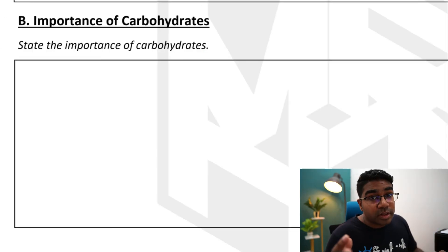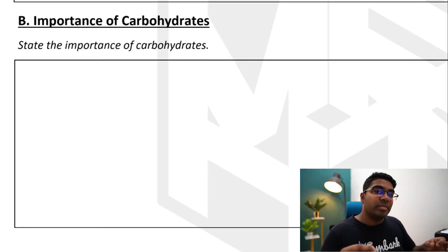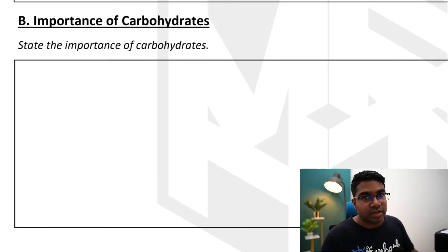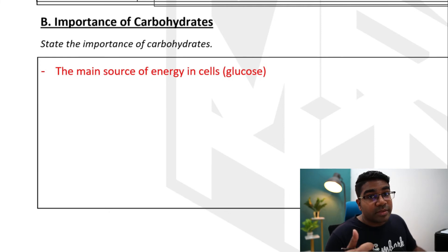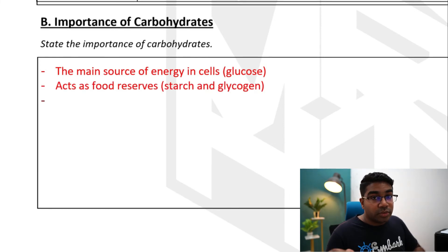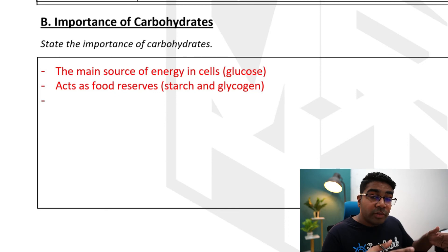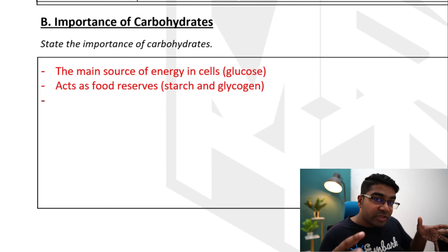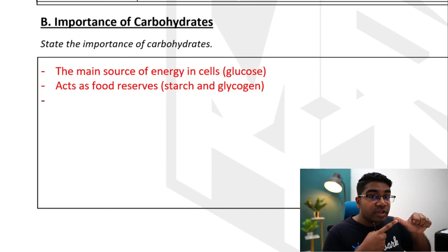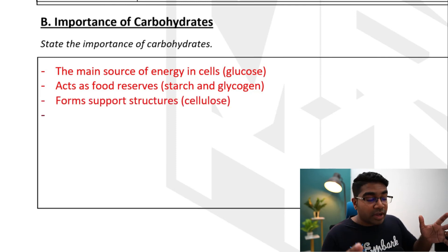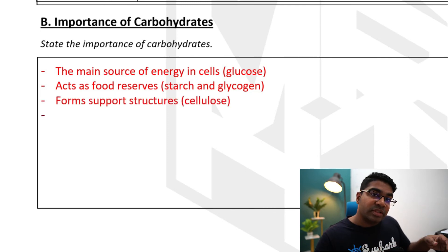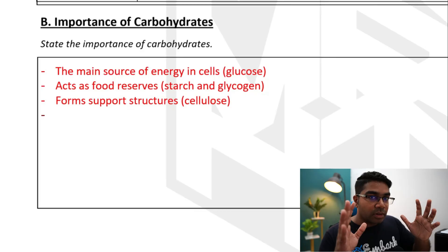When we talk about the importance of carbohydrates, you need to remember their functions. Number one: carbohydrates are the main source of energy in cells — glucose is the main substrate in cellular respiration. Number two: carbohydrates act as energy reserves in the form of starch in plants and glycogen in animals. Number three: carbohydrates also form support structures, such as cellulose in the cell wall.